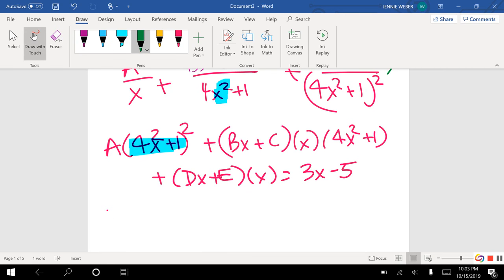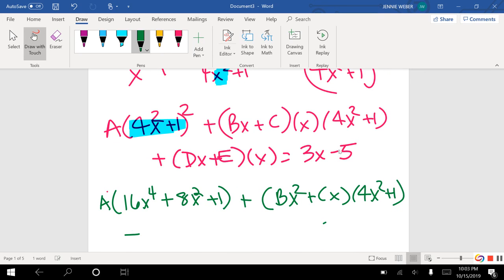So I'm going to start here, and on this one, I've got my A. I need to foil this out, so I get 16x to the 4th plus 8x squared plus 1. Here, I'm going to start by multiplying through by the x, because then I can foil the next two.